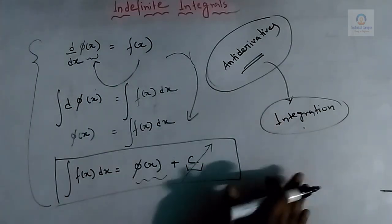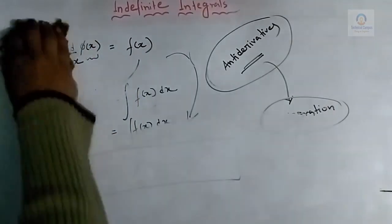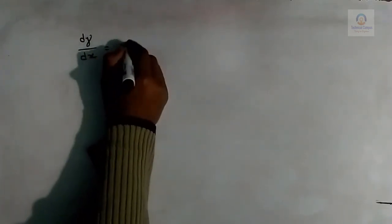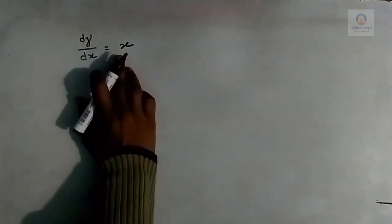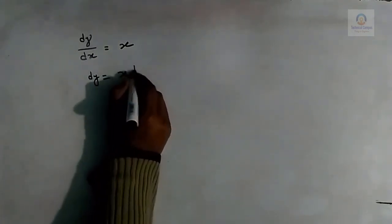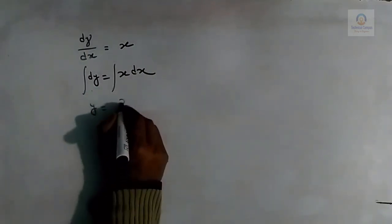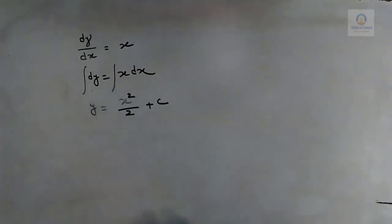Let us learn some formulas of integration, but before that let us see why we have to take the constant C every time when writing a formula for integration. Suppose we have dy/dx = x. As we just learned, if we integrate x dx we get y. So writing dy = x dx and integrating both sides, we get y = x²/2 plus a constant C.